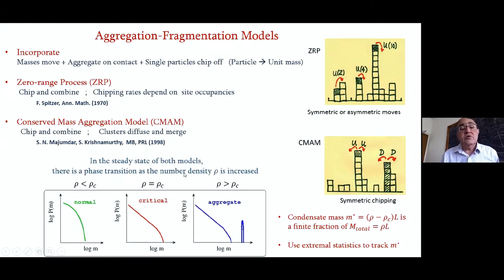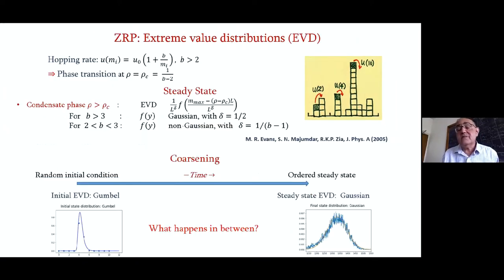There's also something called the conserved mass aggregation model CMAM, in which in addition to chipping of particles, you can have overall movement of a cluster on a lattice. Both these models show a phase transition in the steady state. There's a critical density below which the state is normal - things are spread out. But above which, they're still spread out except at one site there is an infinite aggregate. This aggregate I'll refer to as the condensate. It has a mass which is a finite fraction of the total mass. We will use extremal statistics to track the value of the mass.